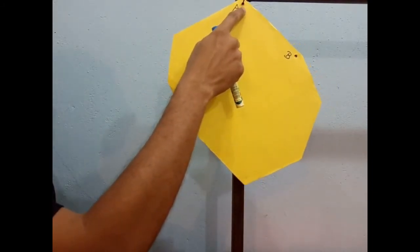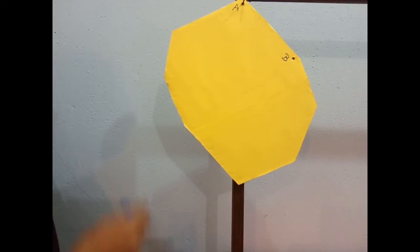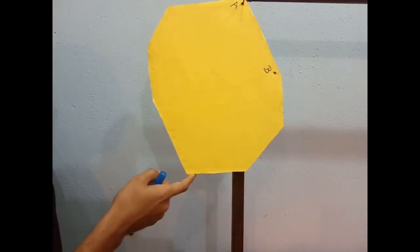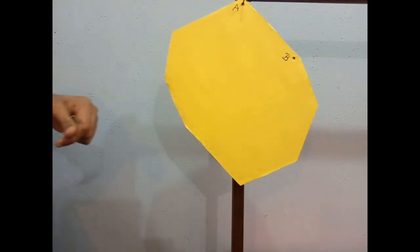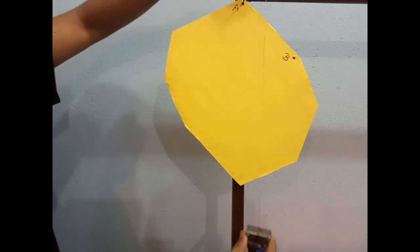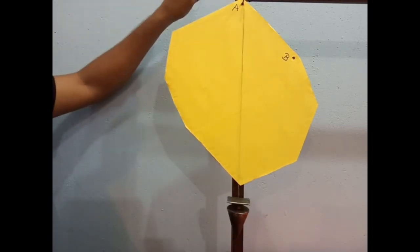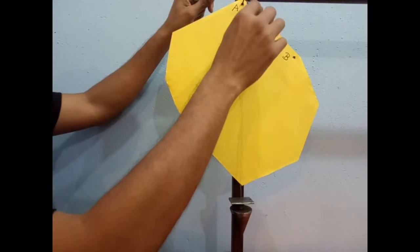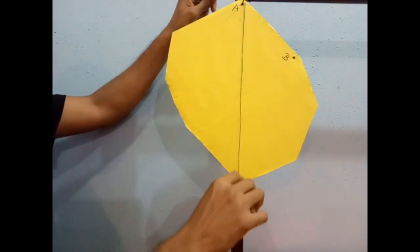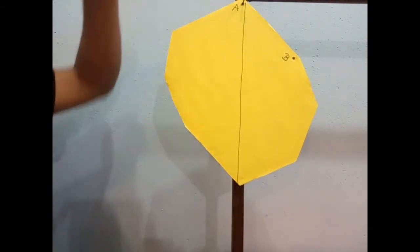Now, I have suspended it at point A. We'll swing it freely. It will come to rest due to gravitational force. Once it comes to rest, using this plumb line, we can draw a straight line.